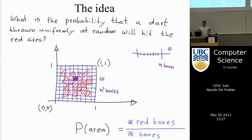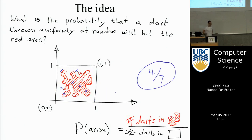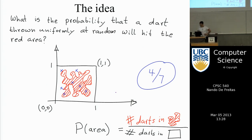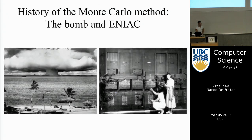The way around the curse of dimensionality is random sampling — essentially throwing darts. You cover your eyes, throw darts at the wall, count how many fell inside, and the fraction inside gives you an estimate of the area. It's an extremely simple but extremely effective idea. You get a better estimate by throwing more darts. That's essentially the Monte Carlo method.